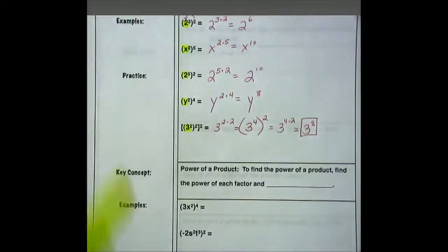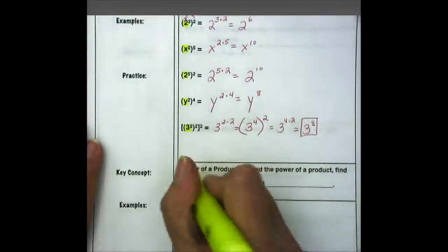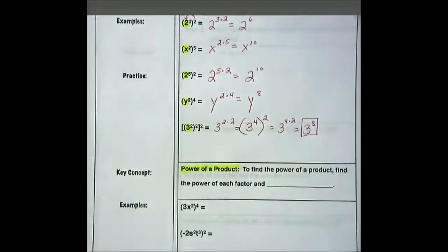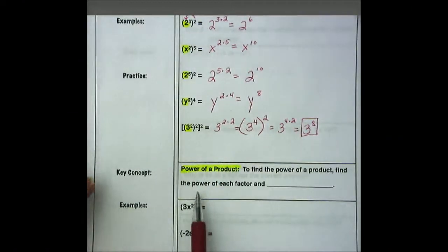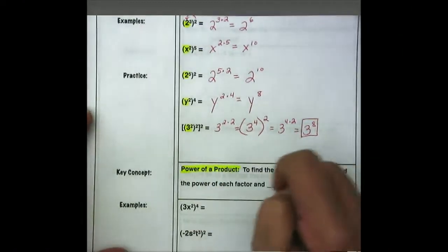Let's take a look at the next section. Our next key concept is power of a product. To find the power of a product, we find the power of each factor and then multiply.